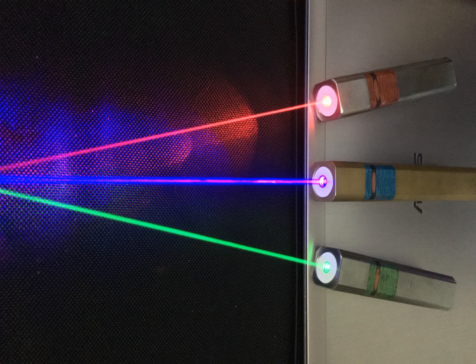Green laser pointers can come in a variety of different output powers. The 5 milliwatt green laser pointers are the safest to use, and anything more powerful is usually not necessary for pointing purposes. Since the beam is still visible in dark lighting conditions,